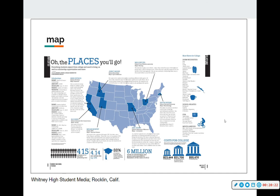A map is a great way to showcase where students are going to college, or where students on campus are from — we've done a world map for that because we have a very diverse campus. You need to make sure the map is something you created, is free to use, and can be manipulated to be clear. This example identifies the school, the student's major, and a little bio. You also have a list of 'must-haves for college,' fast facts with big percentage numbers, and an infographic on the average cost per year for students.